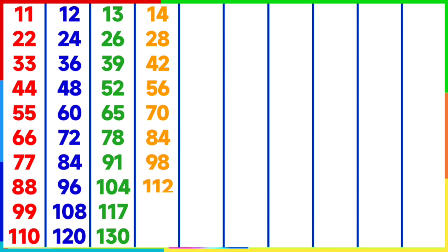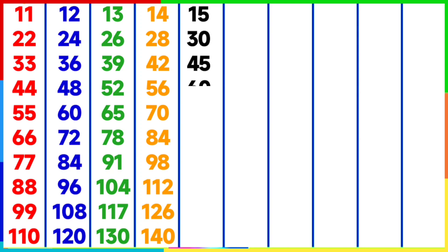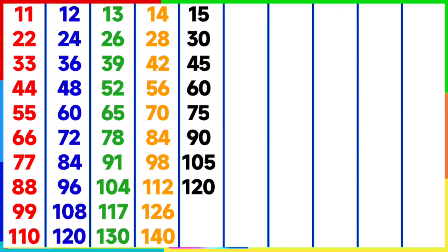14 eights are 112, 14 nines are 126, 14 tens are 140. Table of 15: 15 ones are 15, 15 twos are 30, 15 threes are 45, 15 fours are 60, 15 fives are 75, 15 sixes are 90, 15 sevens are 105, 15 eights are 120, 15 nines are 135, 15 tens are 150.